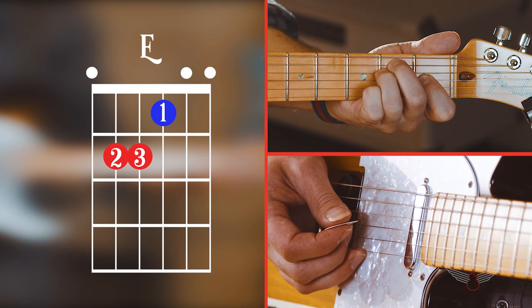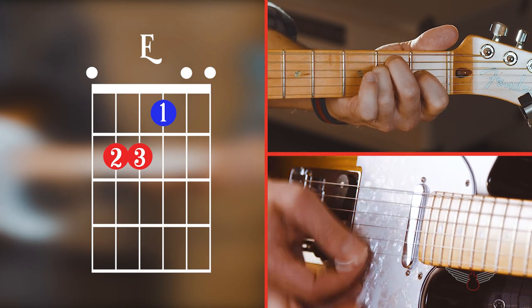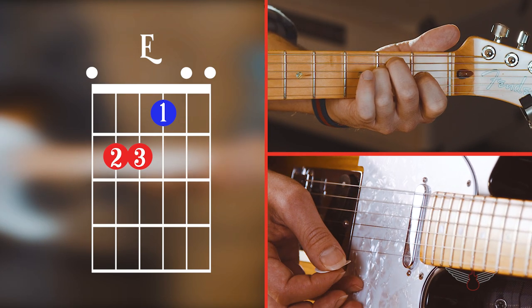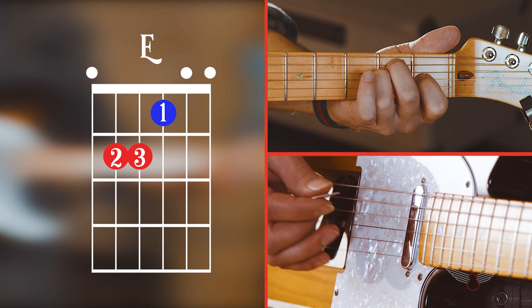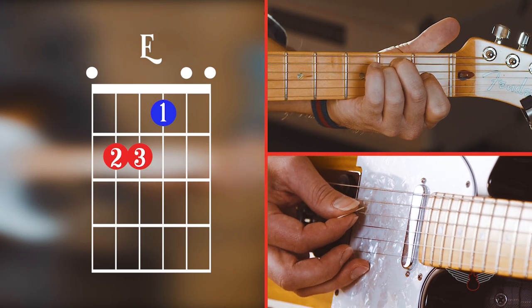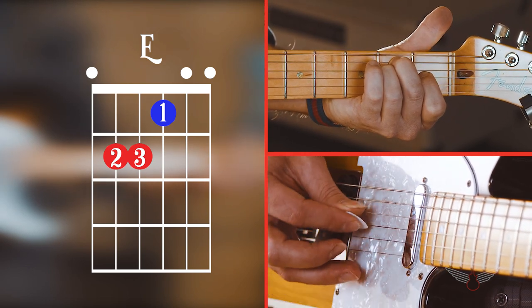Does your chord look like this? Check out the circles on the E chord chart. These mean that you strum all the strings open. Go ahead and strum all your strings. It should sound like this.